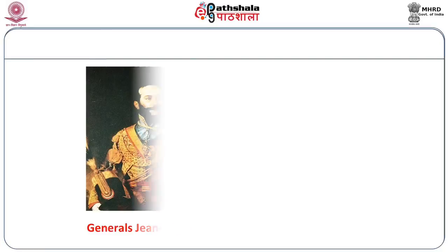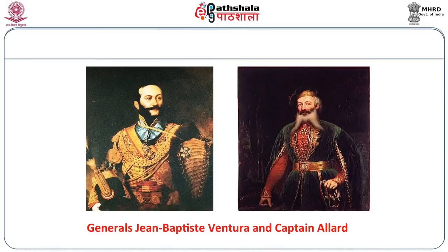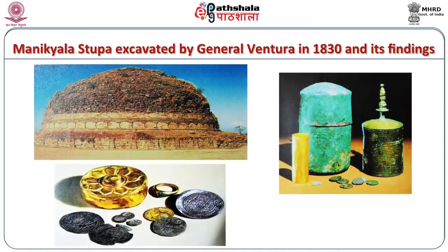Another set of proactive excavators discovering coins were two European generals: General Jean Baptiste Ventura and Captain Allard. Both were in the employ of Maharaja Ranjit Singh, who believed in employing European soldiers for his army. General Ventura went on to find the Manikyala Stupa in 1830, with important findings of actual Indo-Scythian and Indo-Greek coins in this important Buddhist context. A lot of coins from both these generals were also deposited in Europe, some possibly in collections in the West.